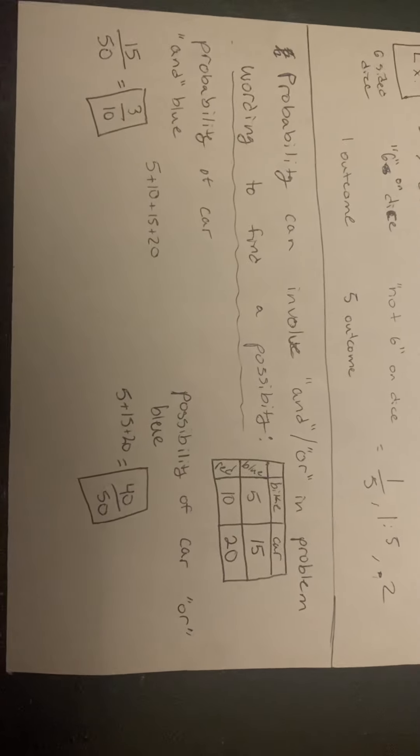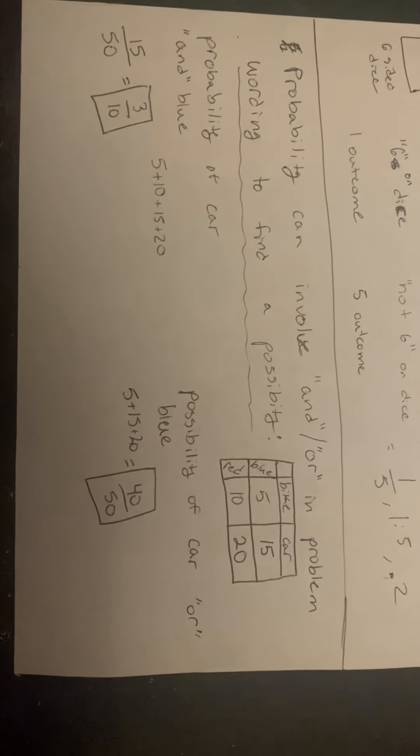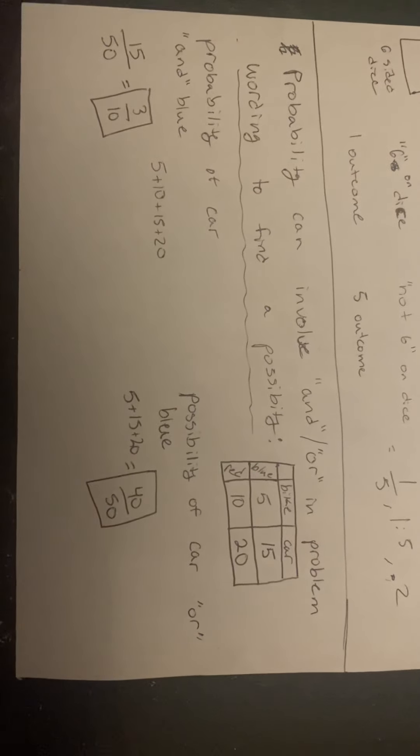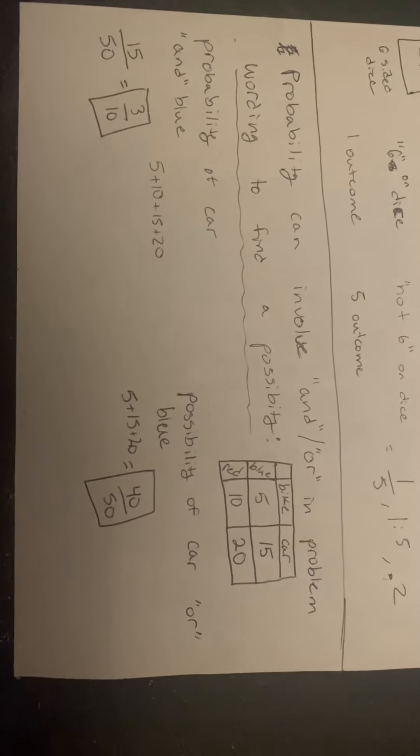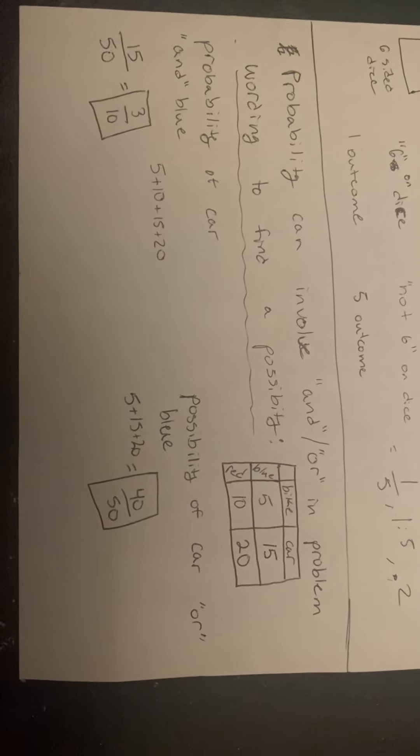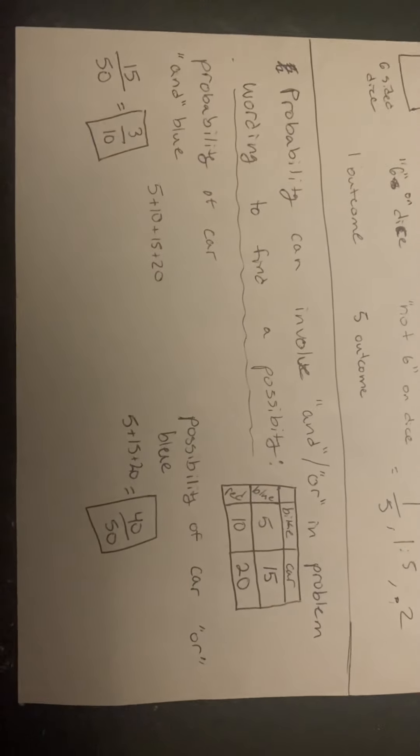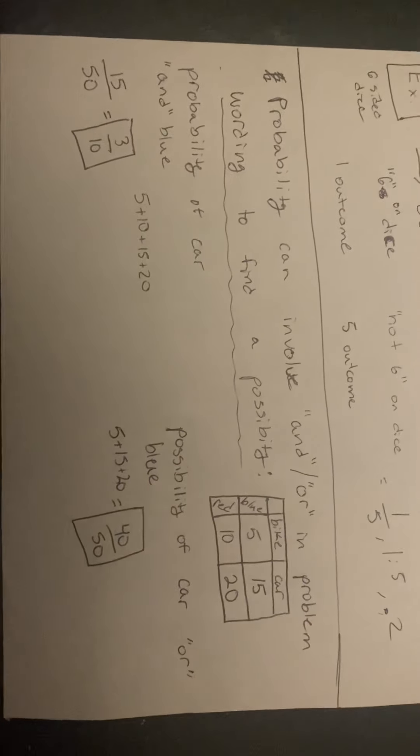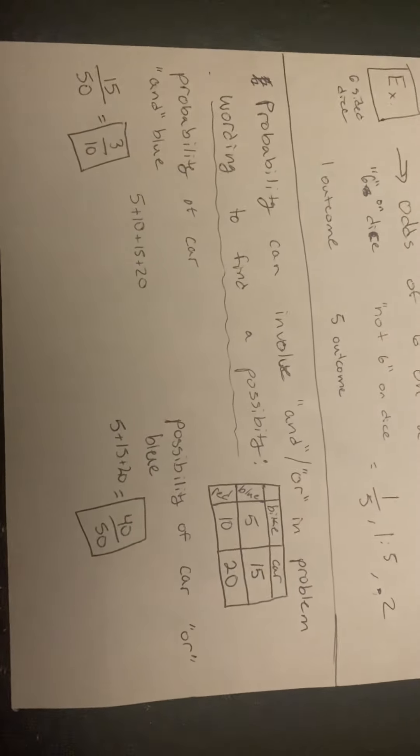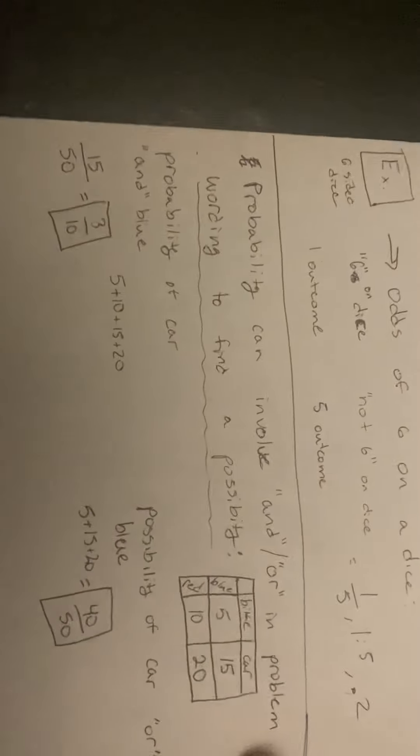As you can see, we add 5 + 15, which makes 20, and add 20 to that, which is 40. Our final fraction would be 40/50, or 4/5.